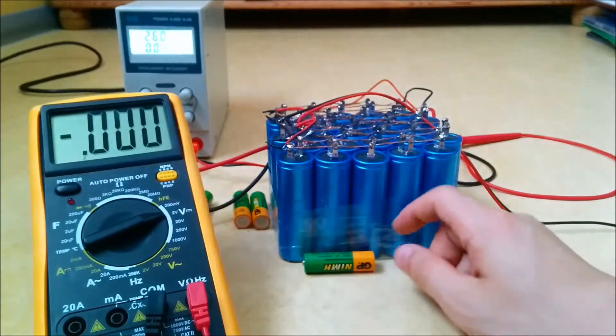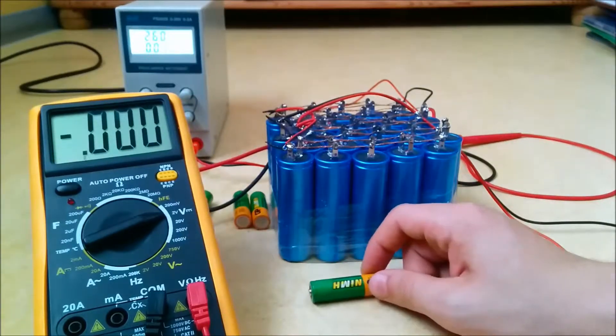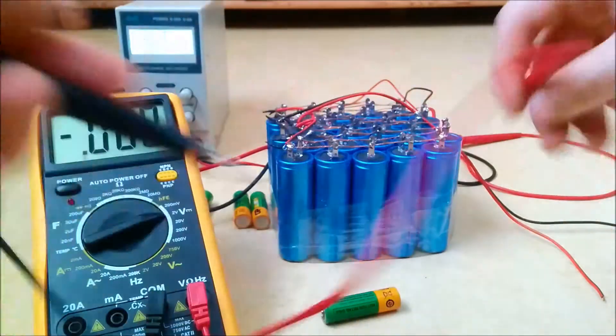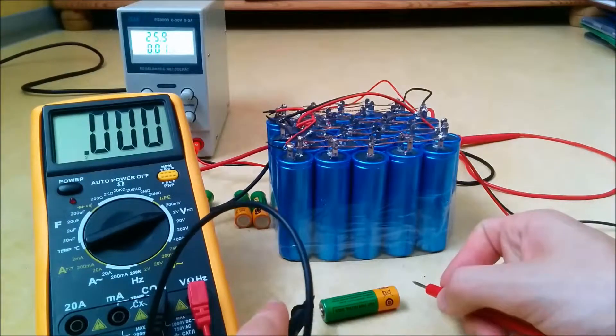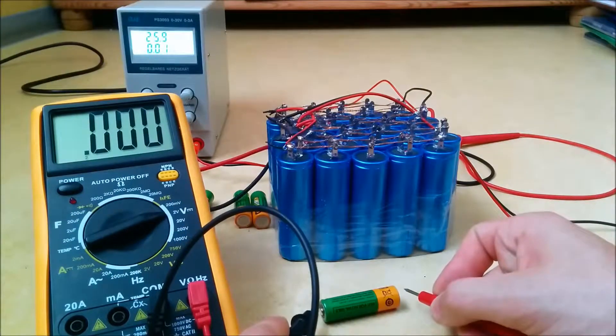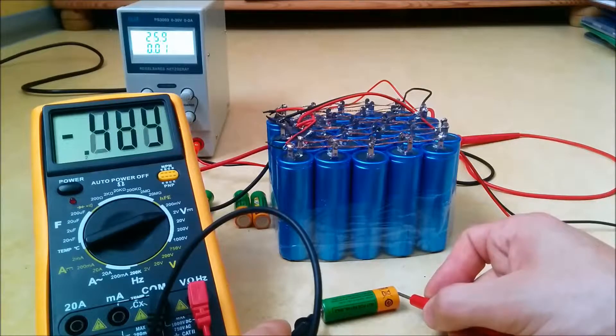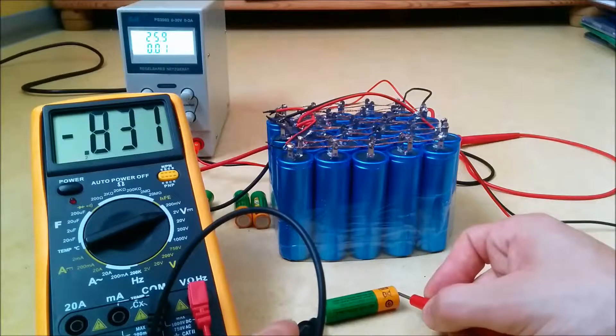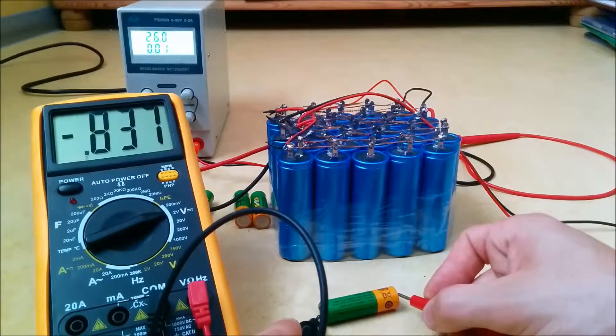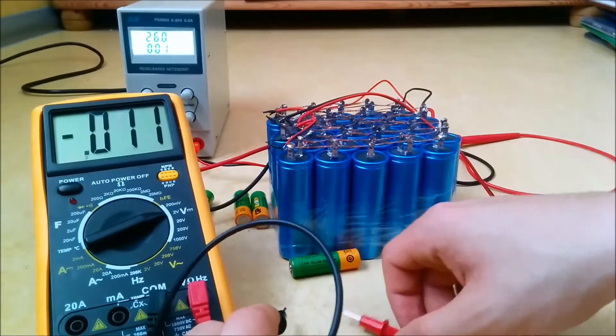We go to the 2 volt range because this nickel metal hydride has a nominal voltage of about 1.2 volts and a maximum voltage it can have is about 1.4 volts. Hook it up and we are about 0.84 volts. That's way too low.